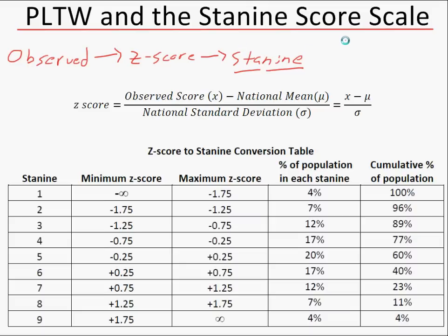The three components we need in order to first calculate the z-scores are collected from all of the national data. We need the observed scores — the individual student observed scores — those are x. The national mean, which is a population mean because we have all the information from all the students, and that component is mu (μ). And over here, this is the observed score, that's x.